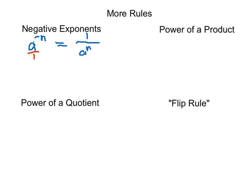The most common mistake with negative exponents is thinking that a negative exponent changes the entire expression into a negative number. A lot of people think that a to the negative n can be written as negative a to the n. This is not true — you do not want to do this. A negative exponent does not change the sign of the value; what it does is drop the entire expression to the other side of the fraction.